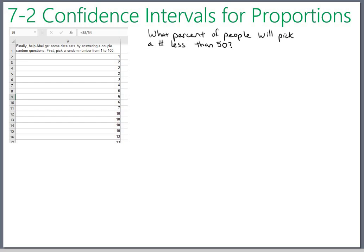Okay, so let's take a little class data example for our first introduction to confidence intervals. At the start of the quarter, I had you all give me a random number from 1 to 100. I have this theory that people tend to pick lower numbers. So here's my question: What percent of people will pick a number that's less than 50?